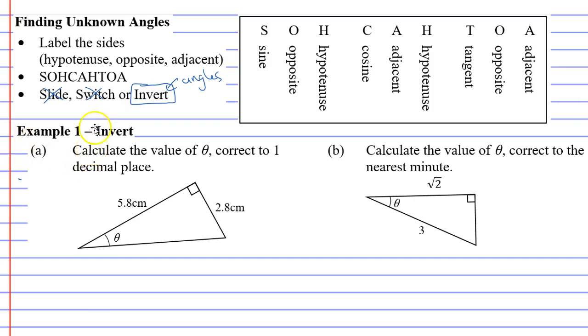Anyway, let's get into the example. So we're going to start off the same as when you find an unknown side. We're going to label the sides. Now our hypotenuse is opposite the right angle. Opposite our written angle or given angle is 2.8 so this is our opposite, and the 5.8 is adjacent to theta.